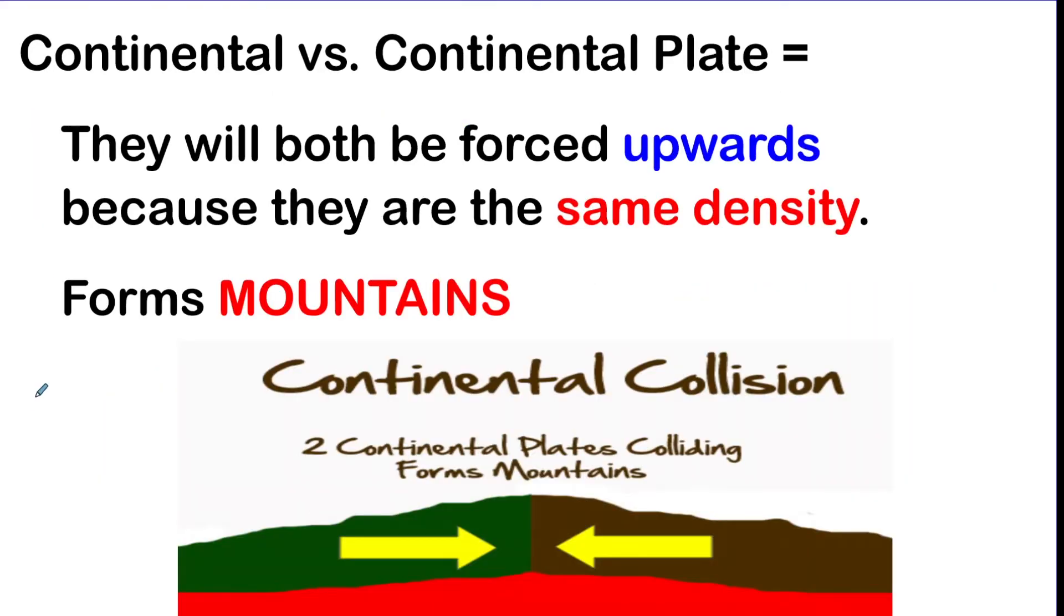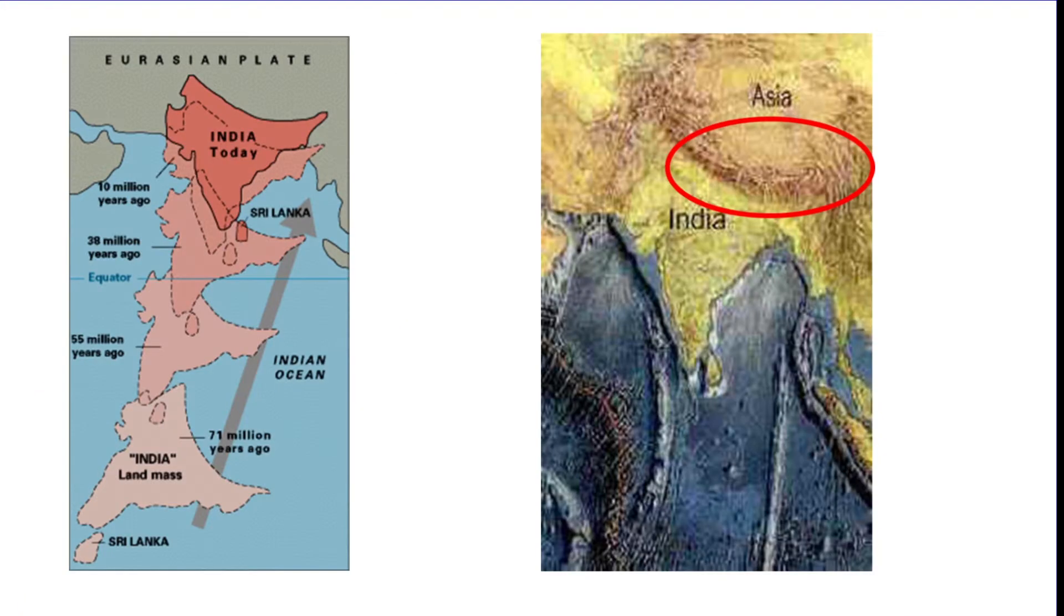The next scenario you can get is a continental plate hitting another continental plate. And since they are equal density, you're going to get a mountain that forms because they're just going to go upwards. And your number one example of this is going to be Mount Everest in the Himalayan mountains in northern India, southern Asia area.